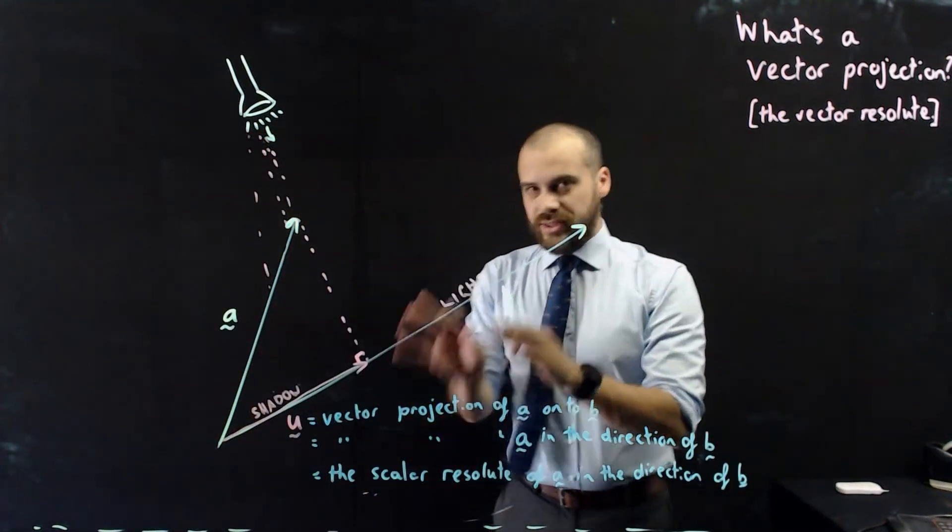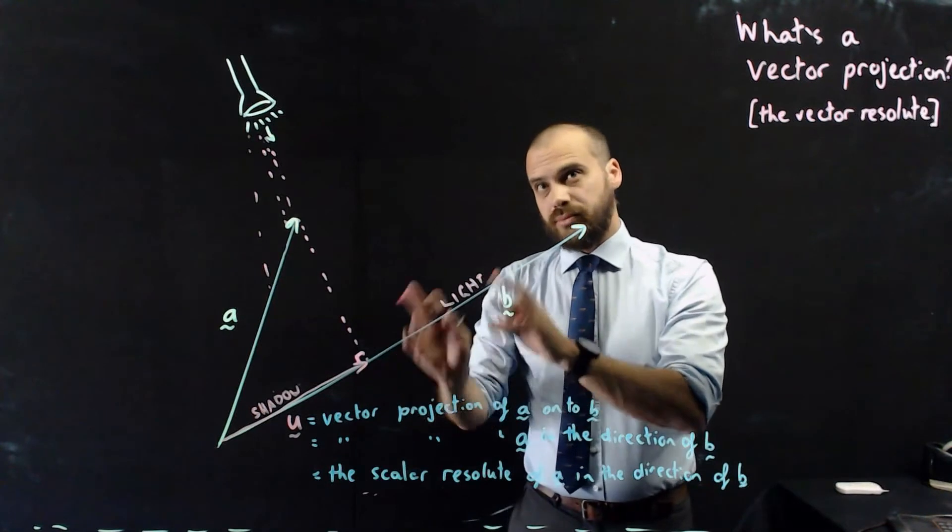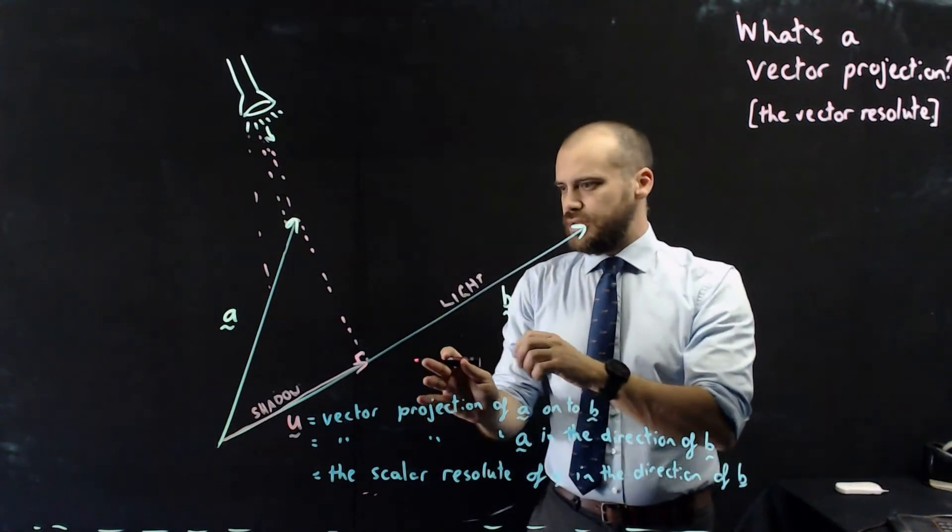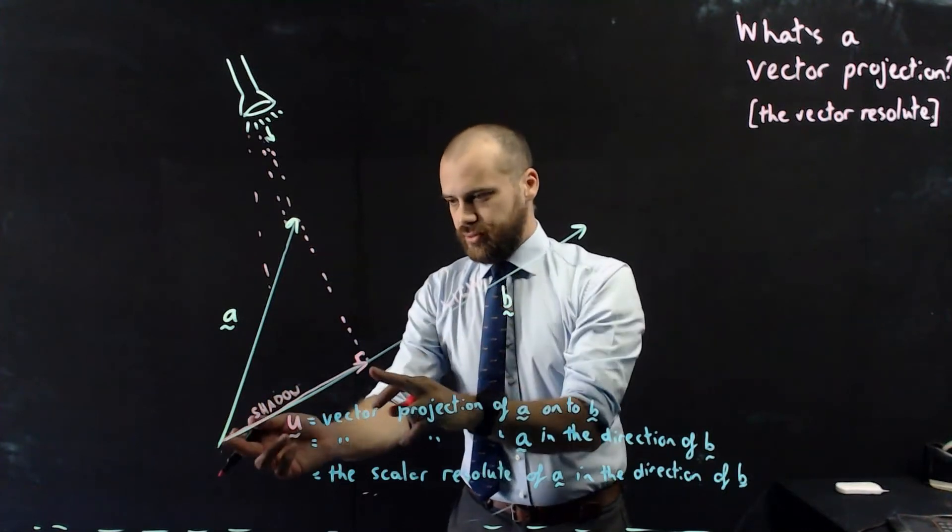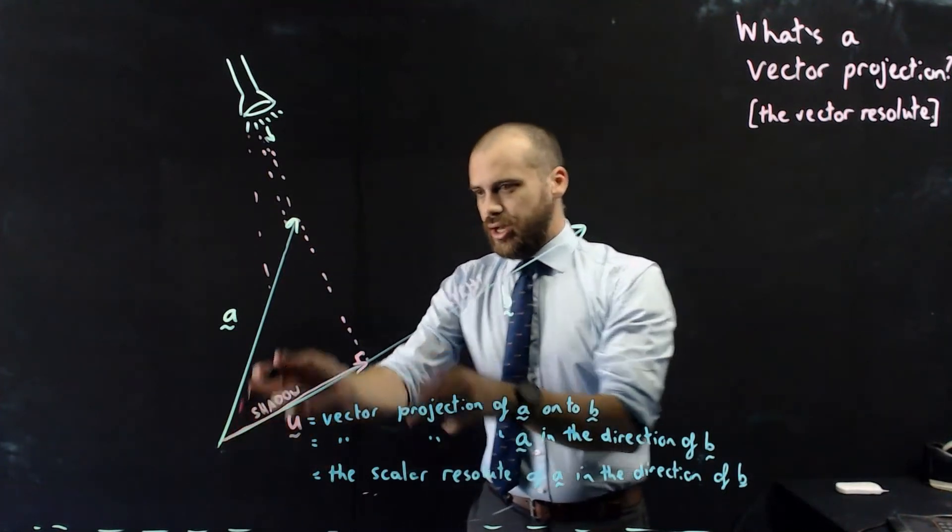That is vector U. You can see a couple of things. In this particular instance, or I'm going to say in all instances, it's going to be smaller than vector A here, the shadow.